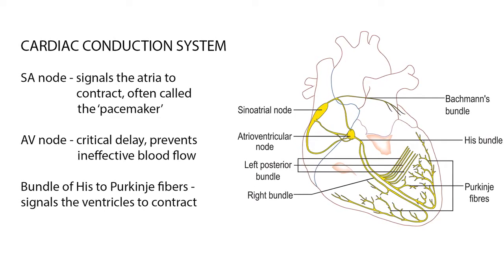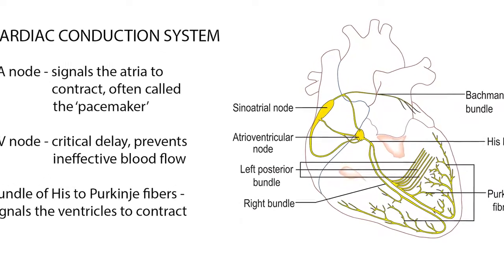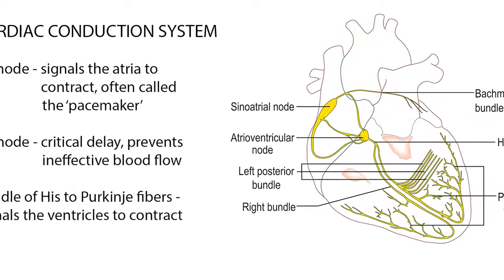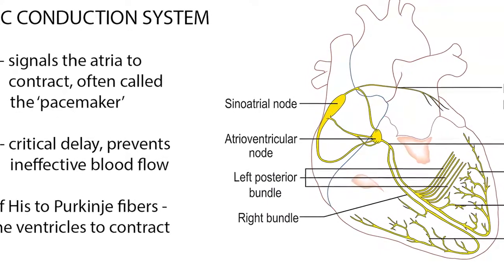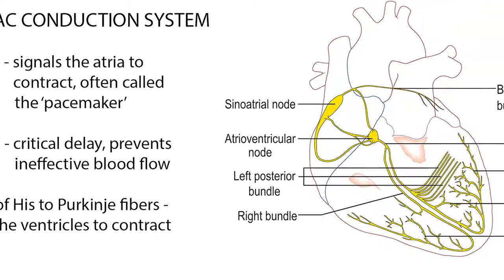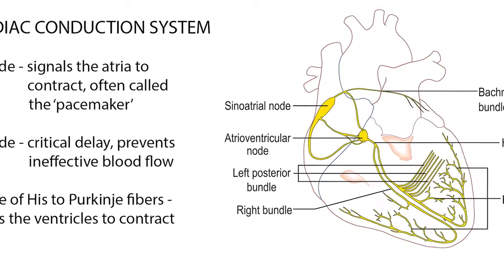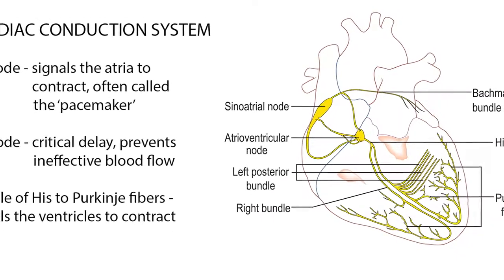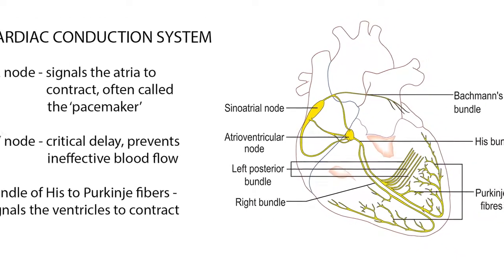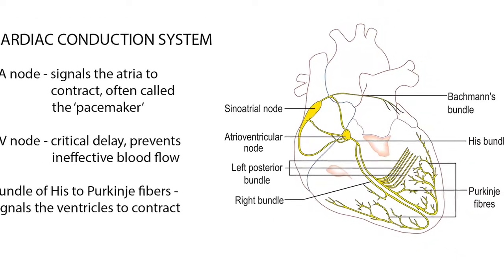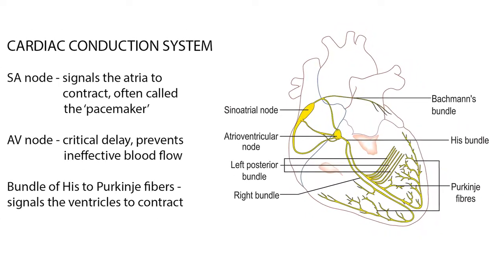Once the atria are activated, the impulse moves down the internodal pathways to the atrioventricular node or the AV node. The AV node functions as a critical delay in the conduction system. This delay prevents the atria and ventricles from contracting at the same time, which would cause an ineffective flow of blood through the heart.